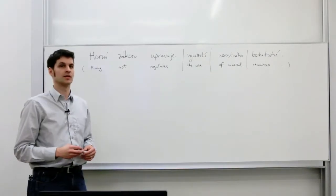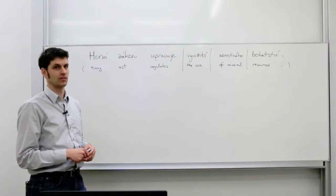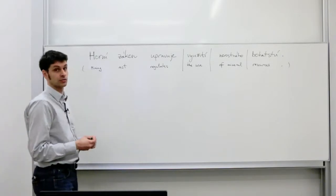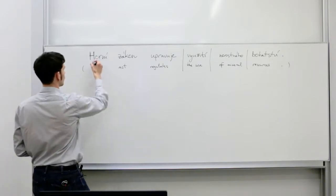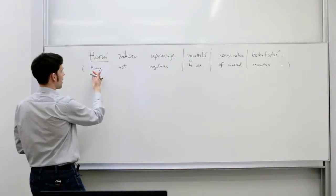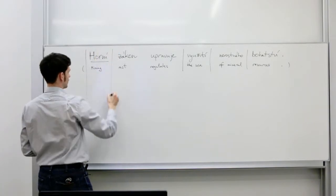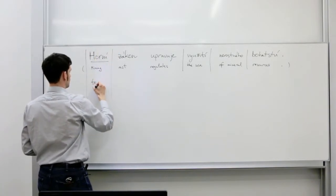The assumption that each of the phrases can be translated independently of the other ones is often very strong, especially if the phrases are cut too short. So for example, this word horní has many different meanings in Czech. And mining is only one of them. And other meanings of this word would be top or upper.